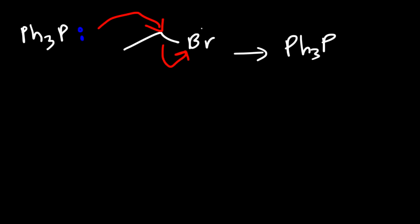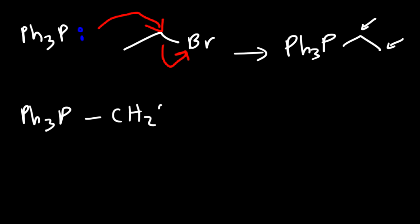Here we have ethyl bromide, so we add an ethyl group to the phosphorus — giving us Ph₃P–CH₂CH₃. The phosphorus atom now has four bonds, so it carries a positive formal charge. Let's redraw the structure showing the CH₂ group explicitly.